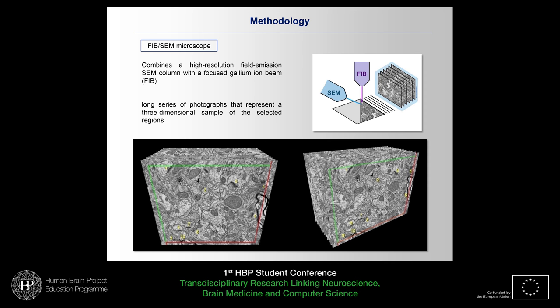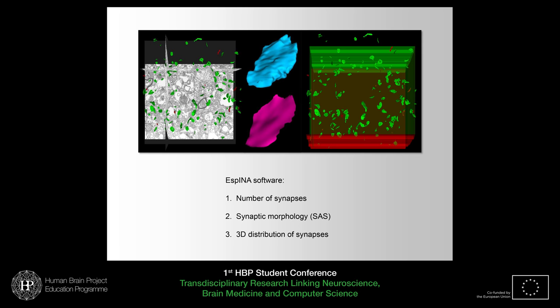To perform the ultrastructural analysis, we used the FIB-SEM microscope. This microscope combines a high-resolution field-emission scanning electron microscope column with a focused ion gallium beam, which removes thin layers of material at a nanometer scale. As each layer is removed by the FIB, the exposed surface is imaged by the SEM, so the automatic and sequential use of both allows us to obtain long series of photographs that represent a three-dimensional volume of the sample.